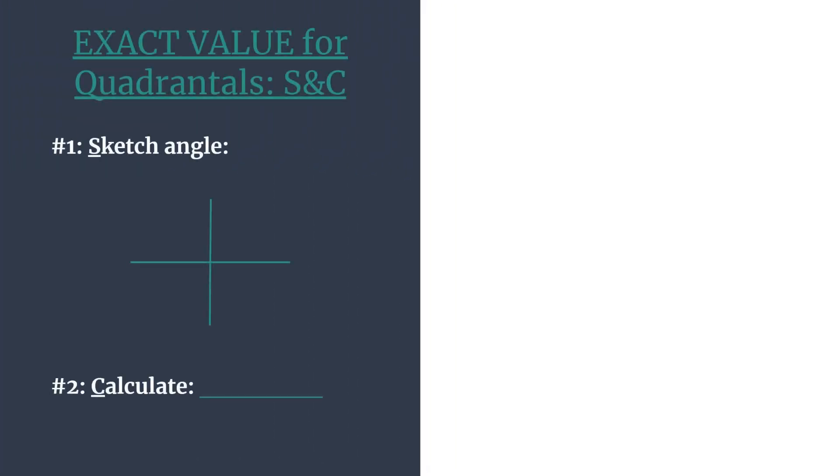So here's what our outline looks like. The S stands for sketching the angle's terminal side, and then we'll find the coordinates. And the C stands for calculate. So we'll calculate the trig ratio that we want. And we're doing this for the tangent of 450 degrees.